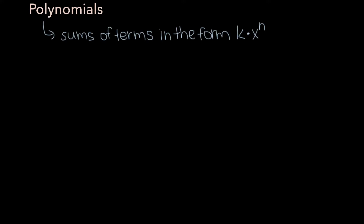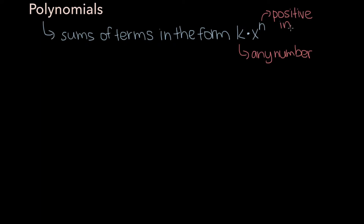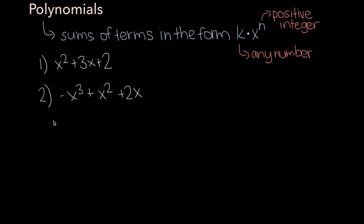Polynomials are sums of terms in the form k times x to the n, where k is any number and n is a positive integer. Here are three examples of polynomials: x squared plus 3x plus 2, negative x cubed plus x squared plus 2x, and 2x to the fourth plus 1.